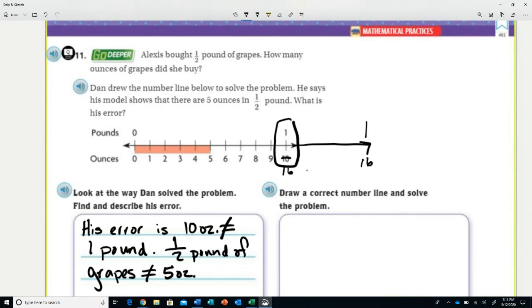It says find the error, so I think we've done that pretty well. So now in the second box here, it says draw a correct number line and solve the problem. So our number line would be something like this where we start at zero and we'll do ounces on the bottom to 16, pounds on the top zero to one. So the top is pounds and the bottom is ounces.